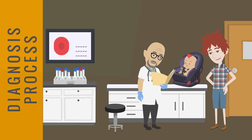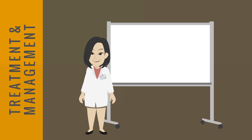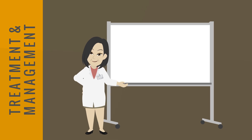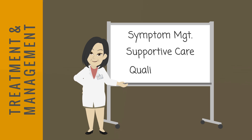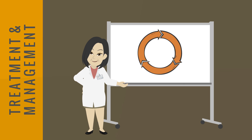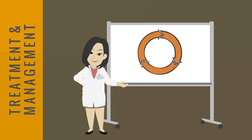Carriers of the condition can be identified through a blood test. Unfortunately, there is no cure for Tay-Sachs disease. Treatments focus on symptom management, supportive care, and improving the individual's quality of life. A multidisciplinary approach involving neurologists, physical therapists, and other specialists is crucial. Treatments may include medication and therapies. Genetic counseling is essential for families, providing guidance on family planning and coping strategies.